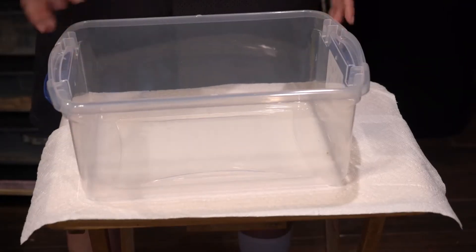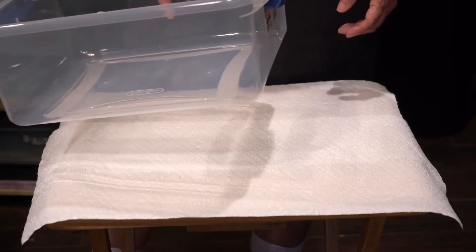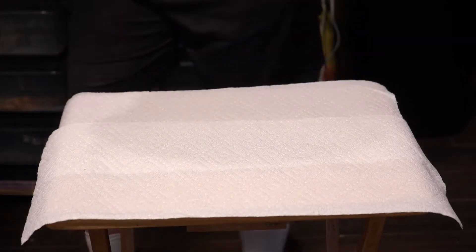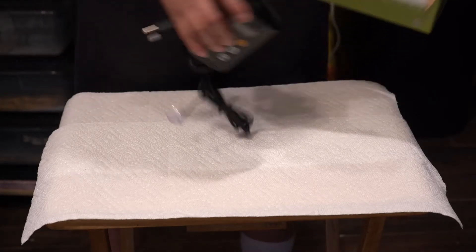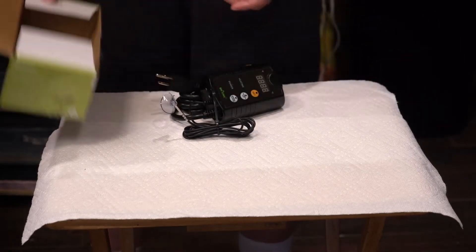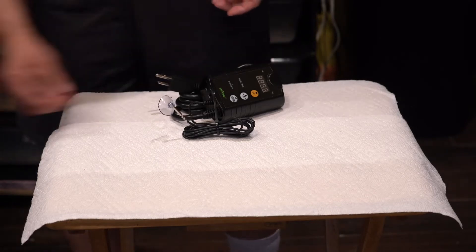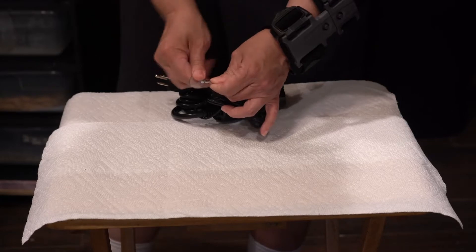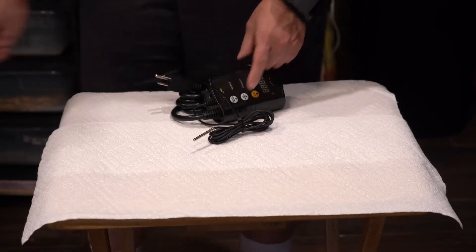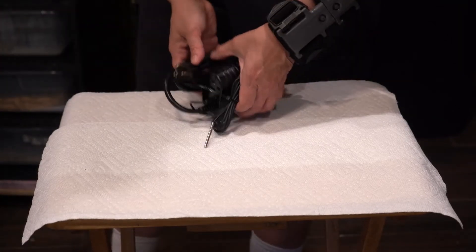Once you have your tub empty, the first thing you're going to want to do is get your thermostat set up. You're going to take your thermostat out of the box. When it comes out of the box, it's going to have a little plastic suction cup. You want to take that off because we're not going to use that. You can just put the suction cup aside because you're not going to need that.